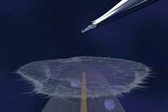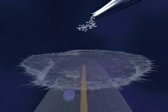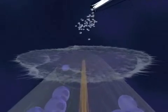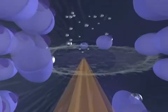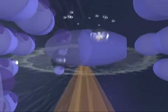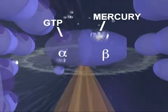When mercury ions are introduced into the culture medium, they infiltrate the cell and bind themselves to newly synthesized tubulin molecules. More specifically, the mercury ions attach themselves to the binding site reserved for guanosine triphosphate, or GTP, on the beta subunit of the affected tubulin molecules.